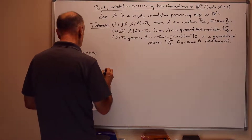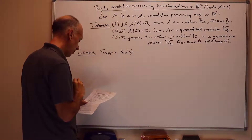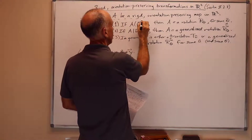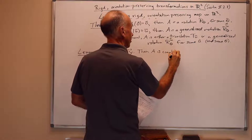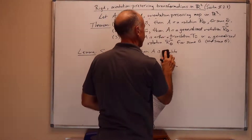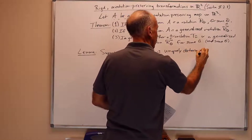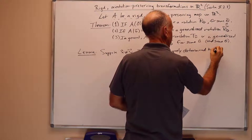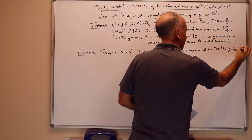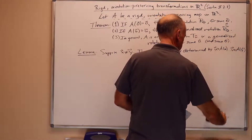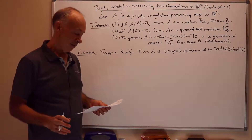Our main lemma is the following. We suppose that we have two distinct points x not equal to y, and we're still always supposing that A is a rigid orientation-preserving map on R2. Then A is uniquely determined by its values on x and y — by the value u which is A of x, and the value v which is A of y. So if we know that A is rigid orientation-preserving and we know its values on two points, then we know the whole mapping.